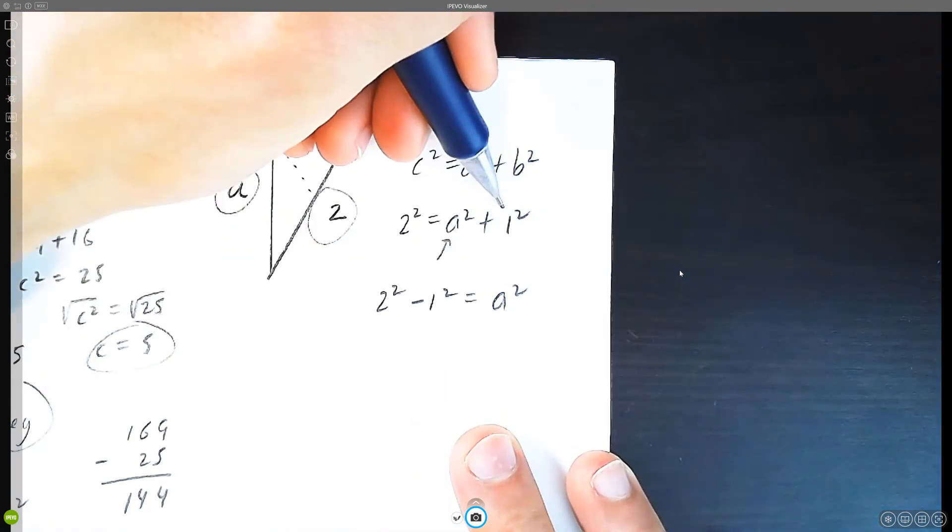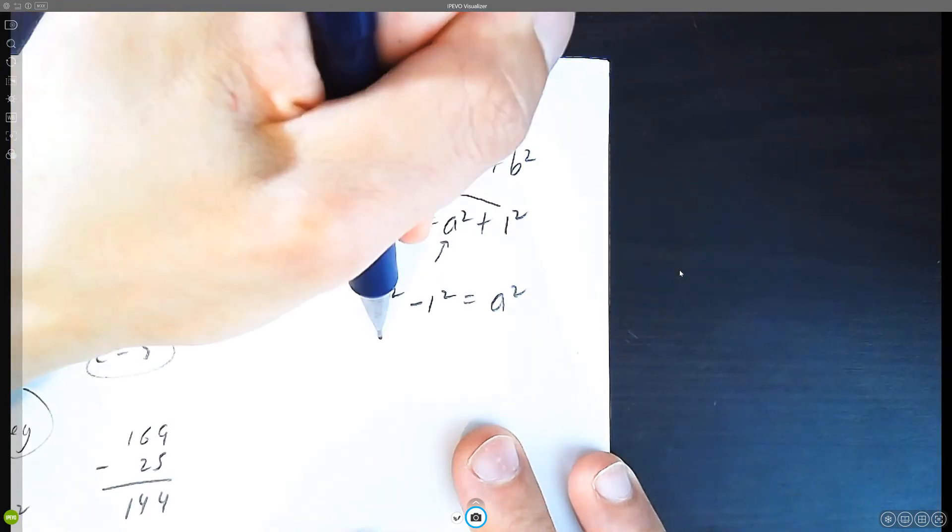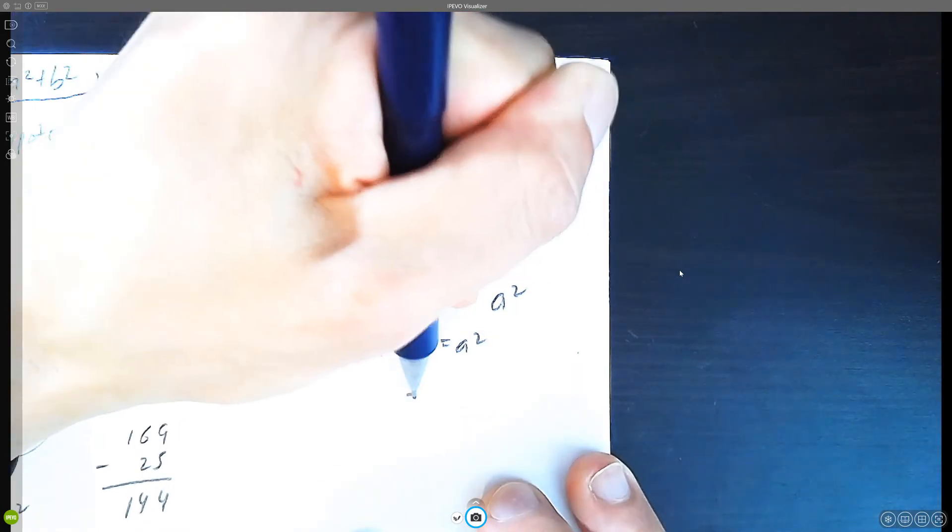So what happens is when you throw this over, it becomes a, the positive becomes a negative. Two times two is four. One times one is one. Four minus one is three.